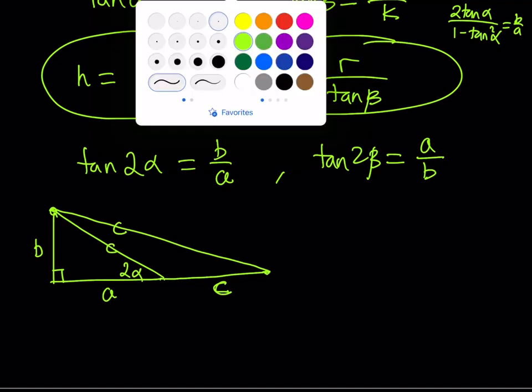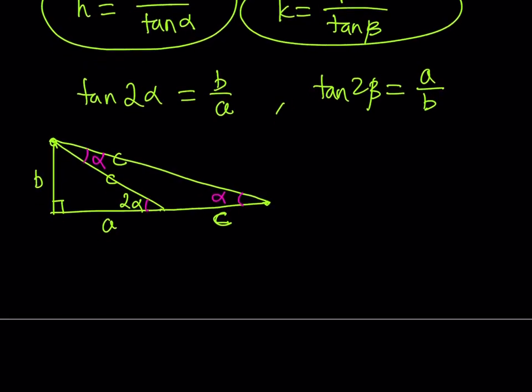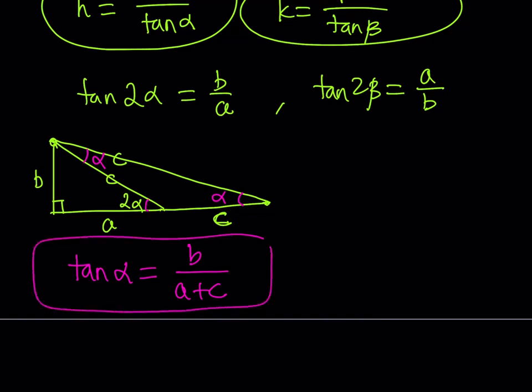So, what is that supposed to mean? Well, it means that the base angles are congruent and their sum from exterior angle theorem is 2 alpha. Therefore, this is alpha and this is alpha. Beautiful. From here, what am I going to get? I'm going to get tangent alpha. Nice. Tangent alpha can be written as b over a plus c. Beautiful. You're going to see in a little bit why this is so beautiful.